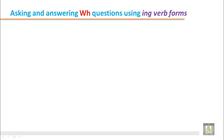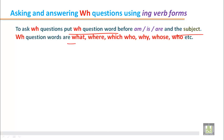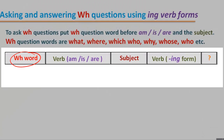Now we will learn about asking and answering WH questions using ING verb forms. To ask WH questions, put the WH question word before am, is, or are, and before the subject. WH question words include what, where, which, who, whose, etc. The structure is: WH question word first, then am/is/are according to the subject, then the verb in ING form, and finally the question mark — not a full stop.